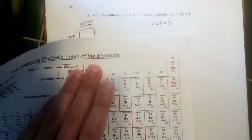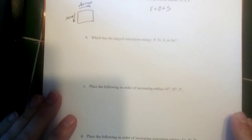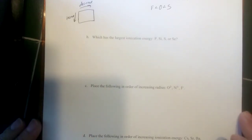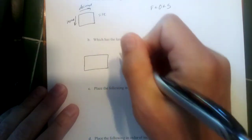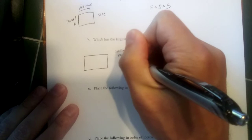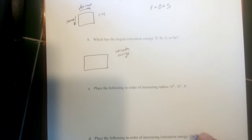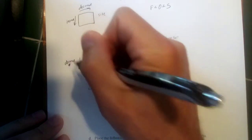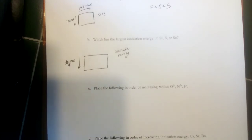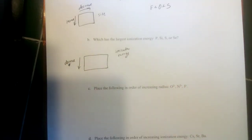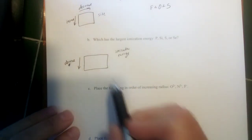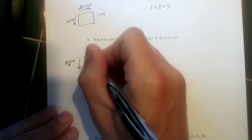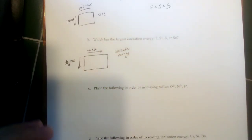The second question asks which has the largest ionization energy: phosphorus, silicon, sulfur, or selenium. Ionization energy is how much energy it takes to remove an electron from an atom. It decreases as you go down the periodic table because the outermost electron is more shielded from the nuclear charge. It increases as you go across because the increasing nuclear charge holds electrons more tightly.